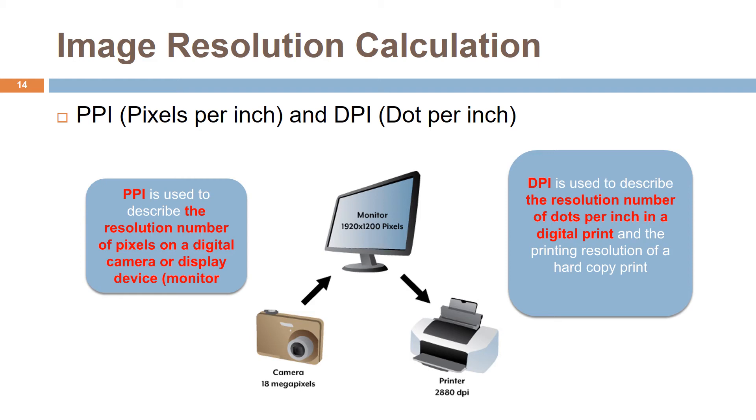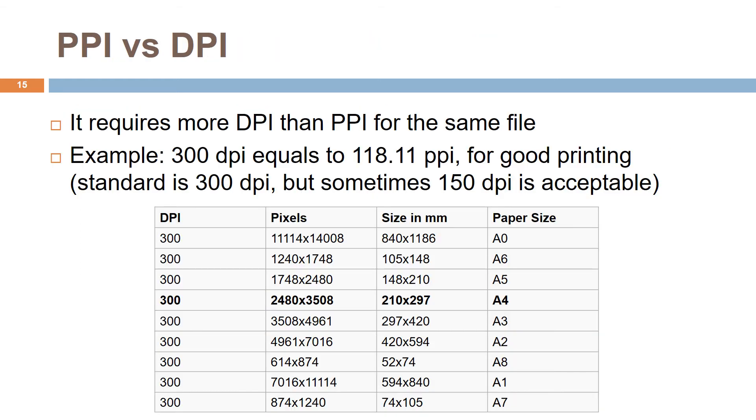Let's look at the relationship between PPI and DPI. Since DPI is a reproduction in real size of the image's PIN memory space, it requires more DPI than require PPI for the same file. For example, a 300 DPI image equals 118.11 PPI. For a good printing output, 300 DPI is a standard.